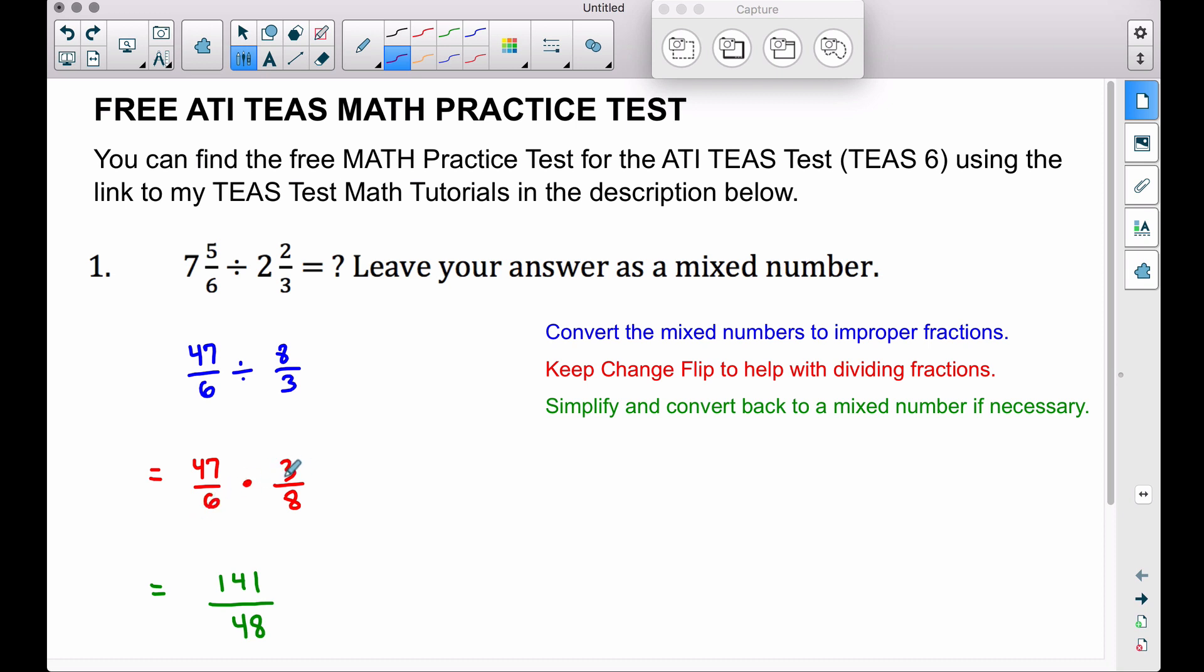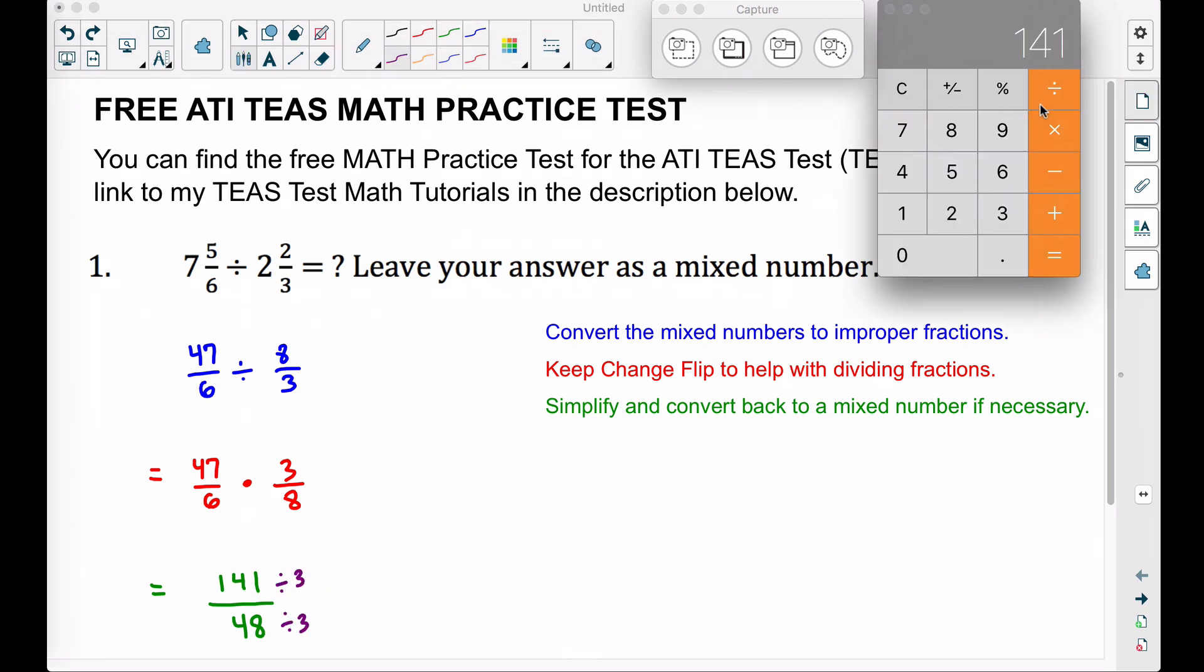I'm going to simplify first. We can divide the top and bottom by 3. Maybe you did notice that up here we could have divided by 3 here before we multiply. As a matter of fact, I will come back and show you that at the end to show you how we do get the same answer. So let's divide these by 3 to simplify this fraction. So taking that 141 dividing it by 3, our new numerator is going to be 47. Hmm, that looks familiar. And then taking the 48 divided by 3, we should get 16 right there.